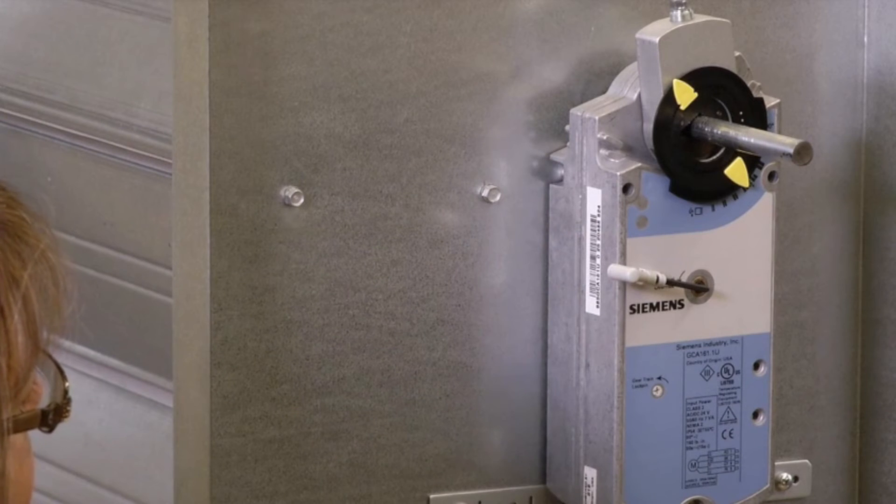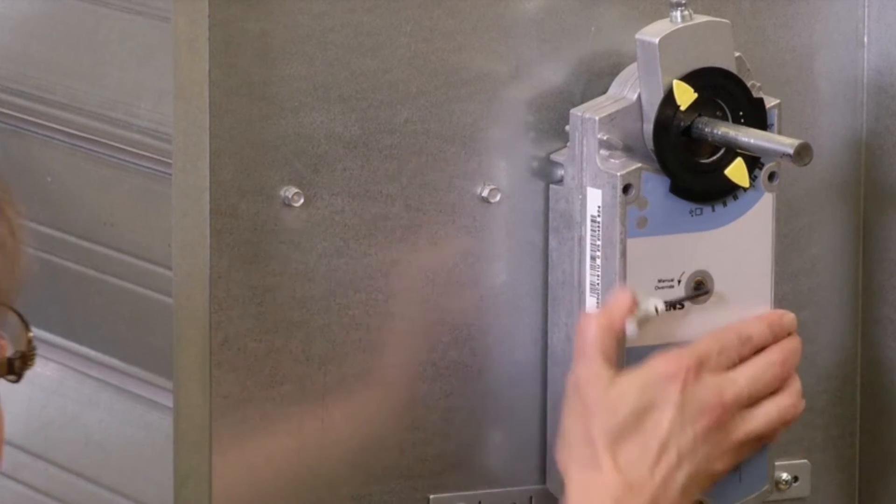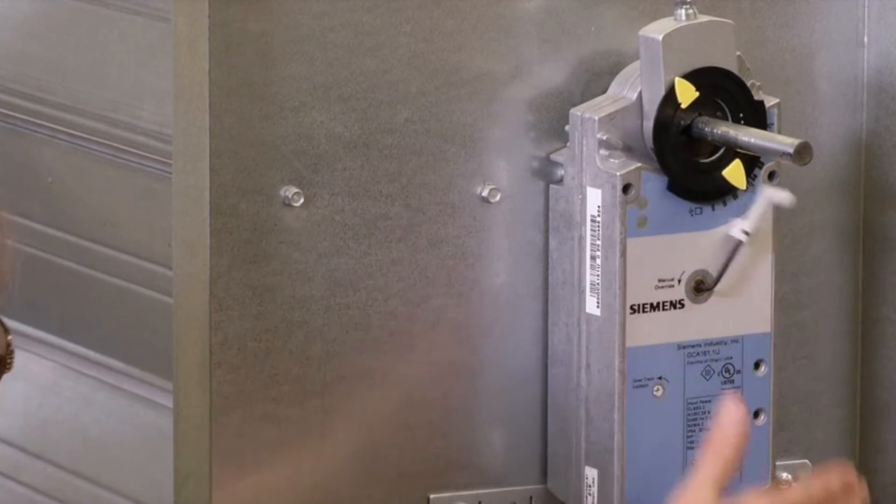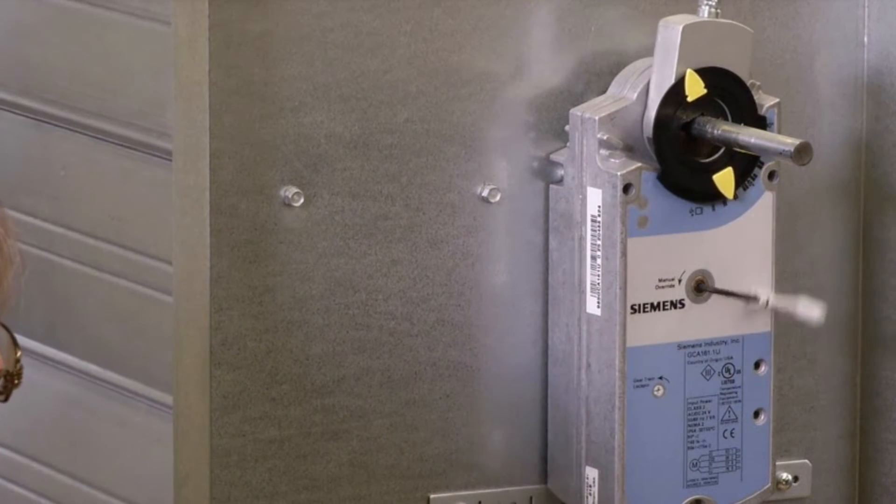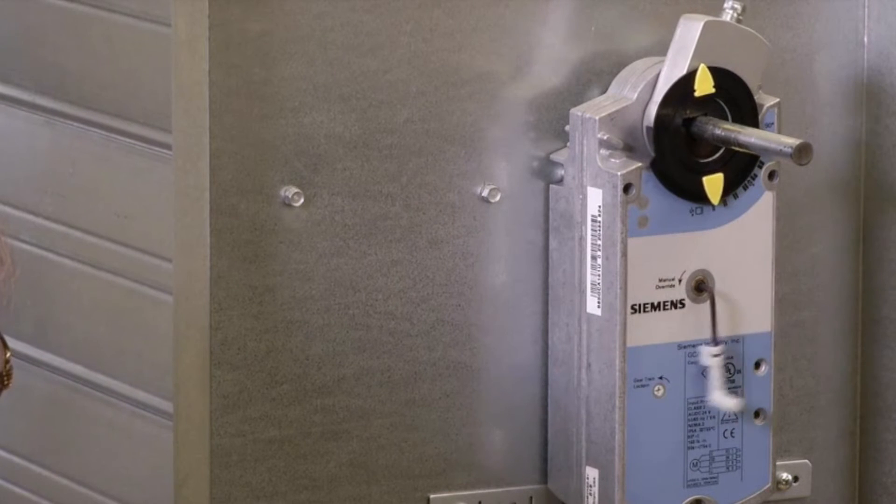To release the manual override, turn the key about five degrees in the direction of the arrow. Once the actuator returns to the fail-safe position, you can remove the key.